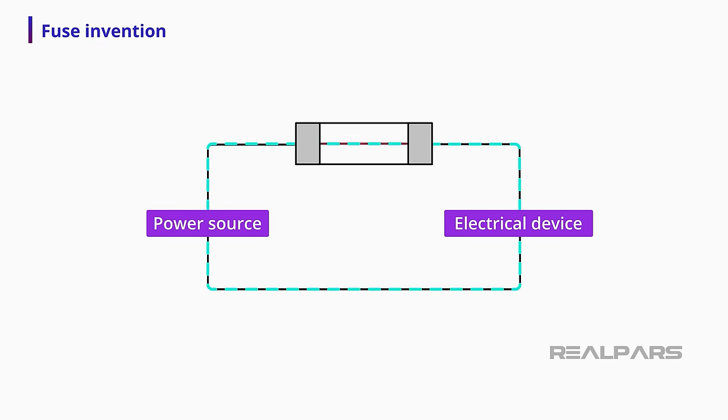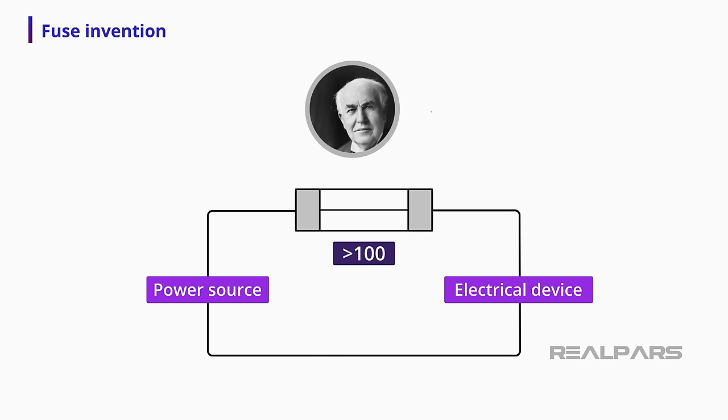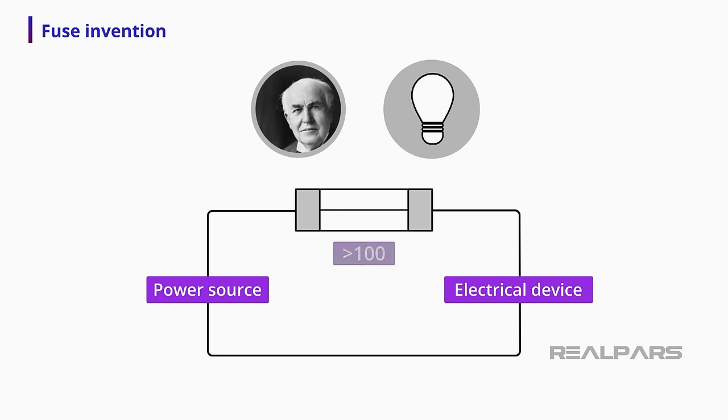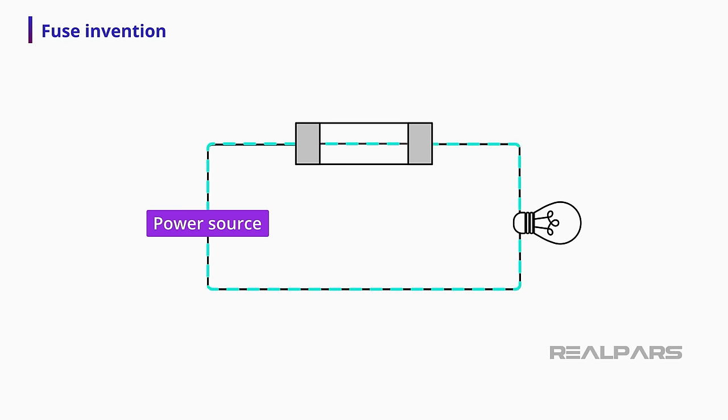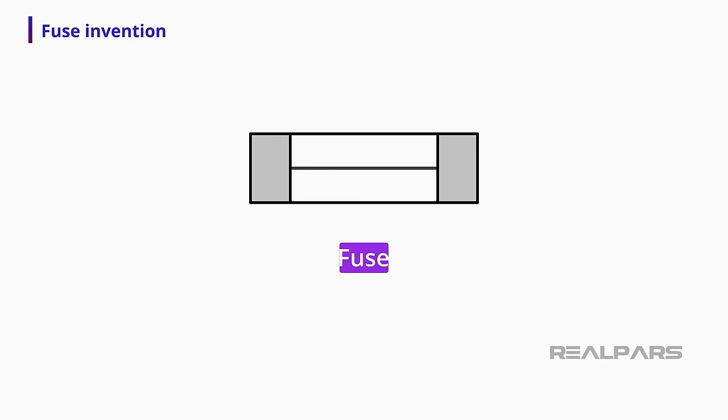The first mention of a device that interrupted the current because of some problem is more than 100 years old and was made in a patent by Thomas Edison, inventor of the incandescent light bulb. At that time, Edison needed a way to protect the lighting system he sold to big cities. For this, he proposed a device that would protect the network against possible short circuits and overloads and called it a fuse.